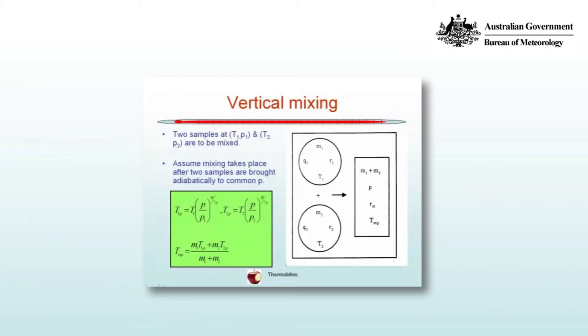In the vertical, T2P is equal to T2(P/P2)^(R/Cp), so again using Poisson's equation, and then we can use the mass weighted mean temperature to get the mean temperature as shown in that equation there.